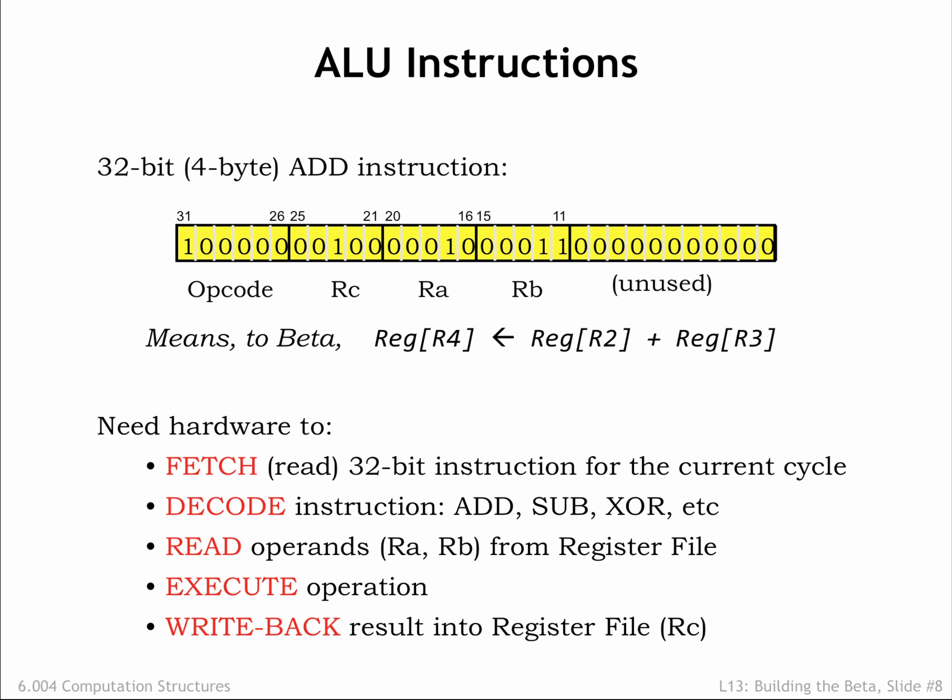Execute, where the requested operation is performed on the two operand values. We'll also need to compute the next value for the PC. And WriteBack, where the result of the operation is written to the register file in the register specified by the RC field.